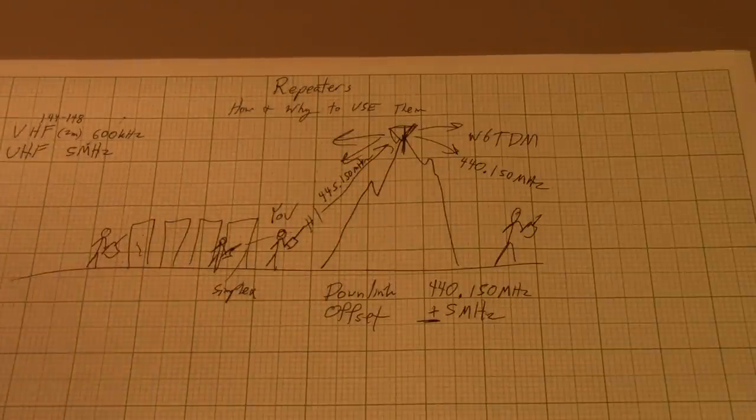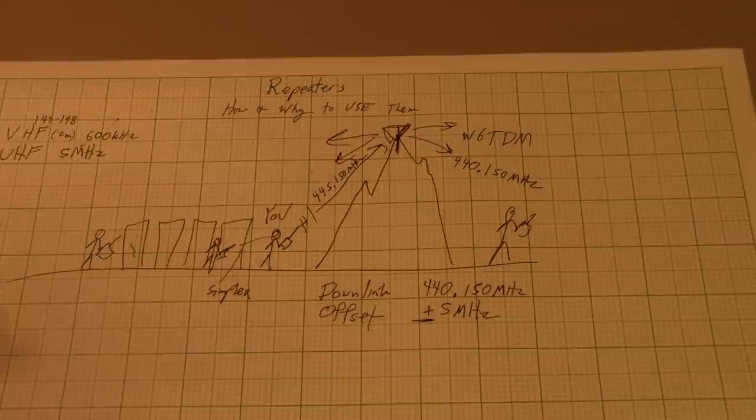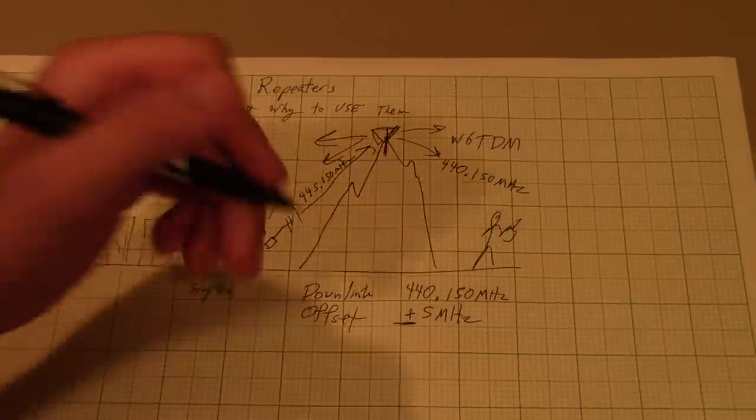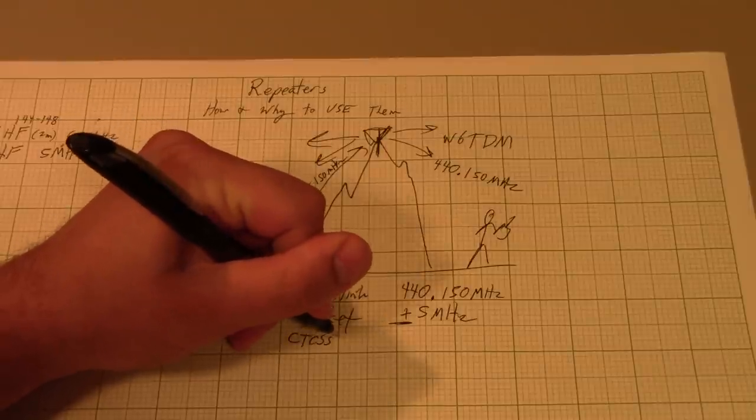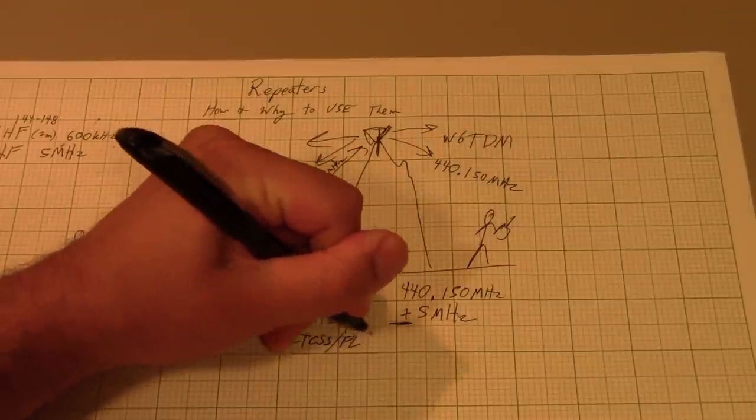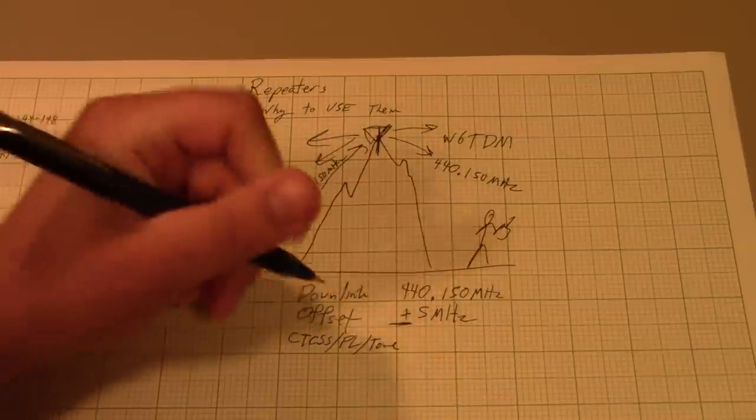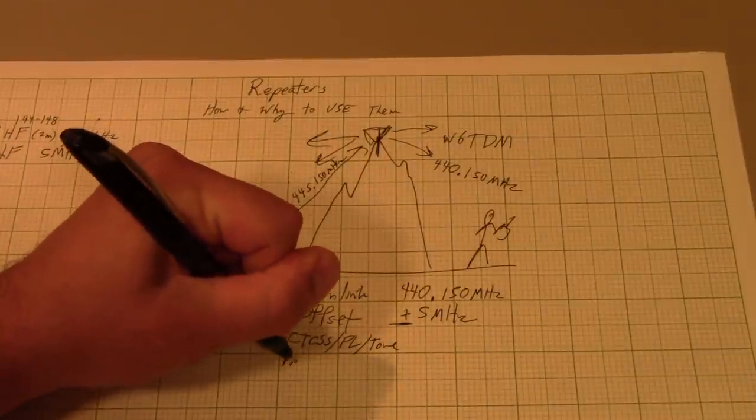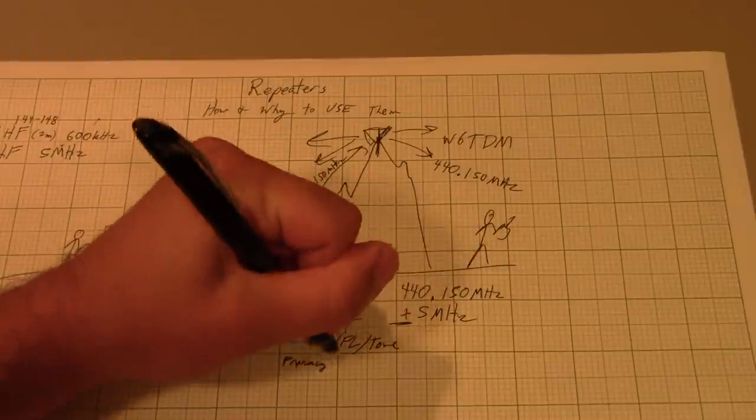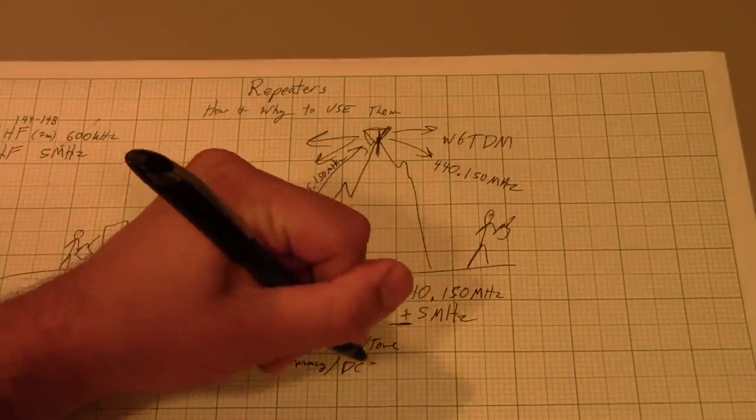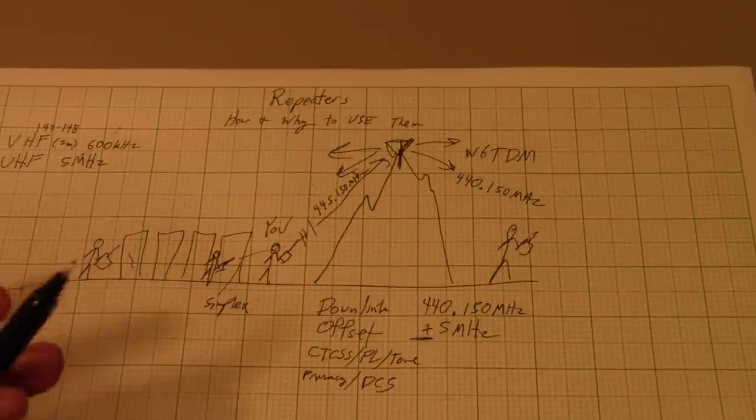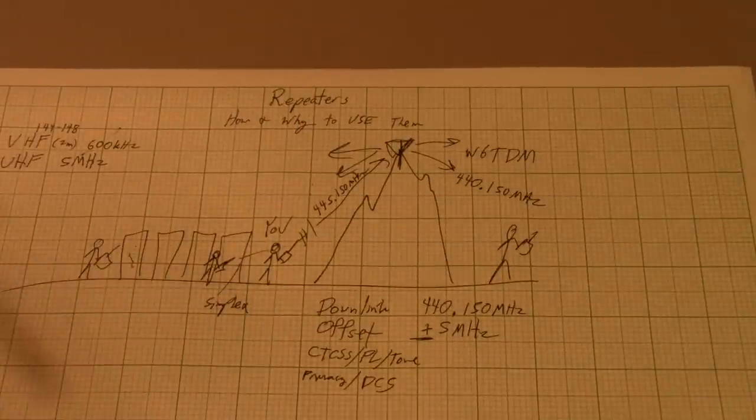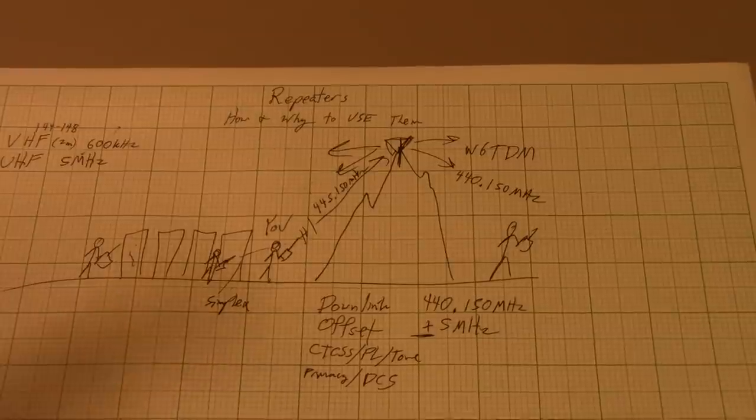This is rarely all that you need. You often also need what's called the CTCSS, or PL, or Tone, or Privacy Tone, or DCS, which are all essentially a lot of different ways to say you need some sort of access code.